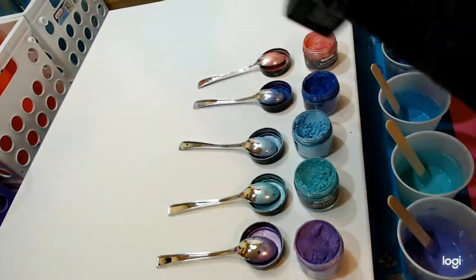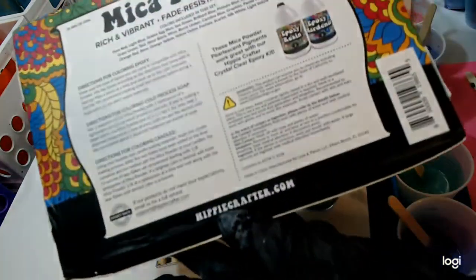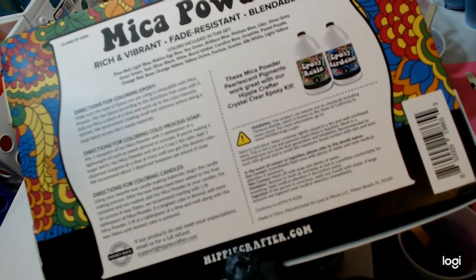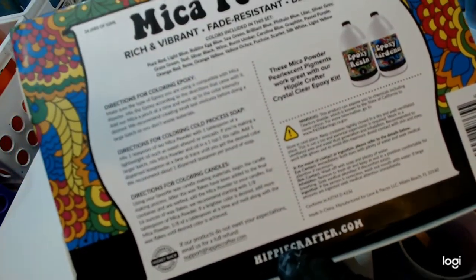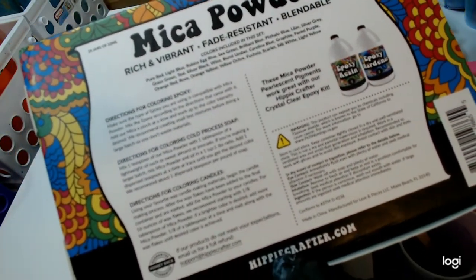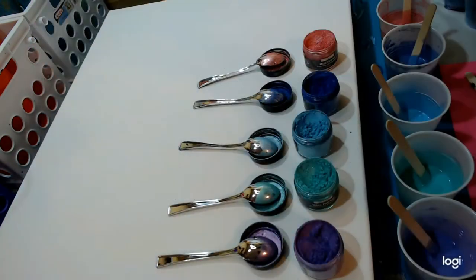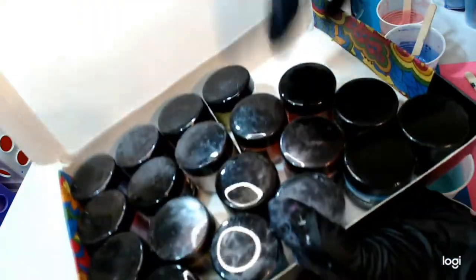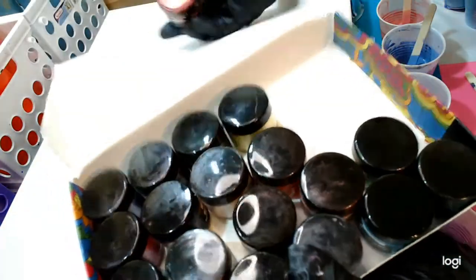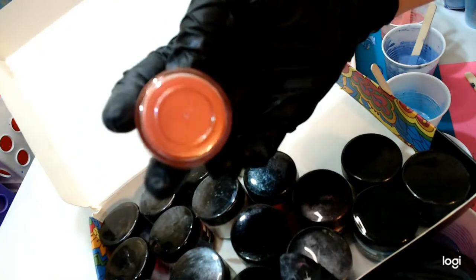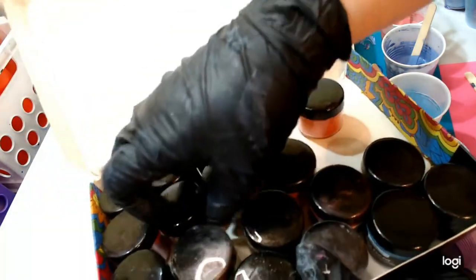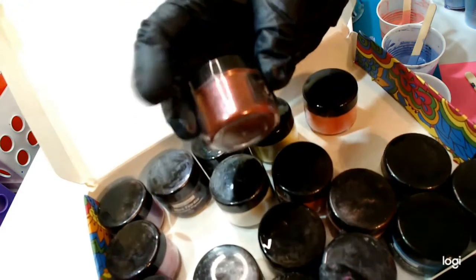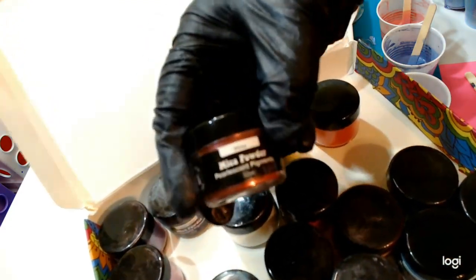They're all kind of pearlescent metallic colors with instructions on the back. A lot of people use these for resin crafts, but today we're just going to mix them in with the Floetrol. I'm going to do a couple different videos. Today's video we're going to mix with Floetrol, but they've got gorgeous colors like this orange-red, such vibrant colors, this beautiful wine color. I'm excited to use that one, a gorgeous wine color.